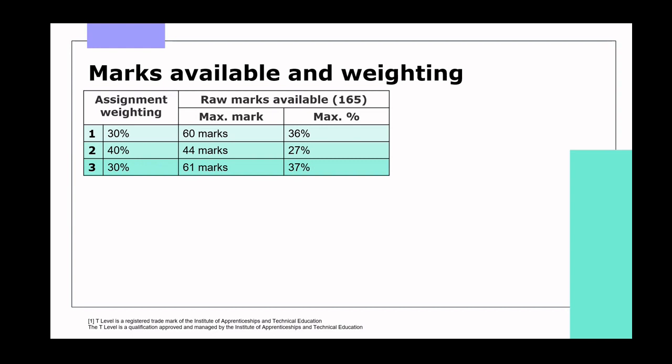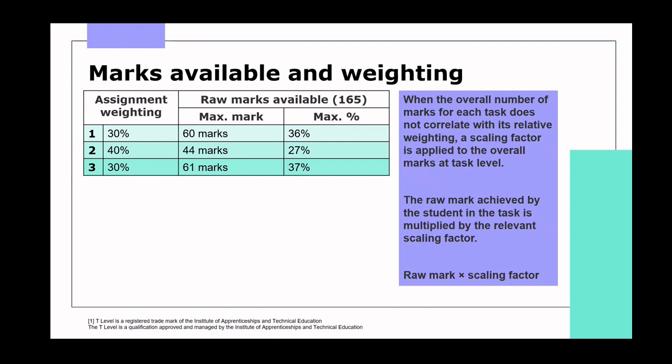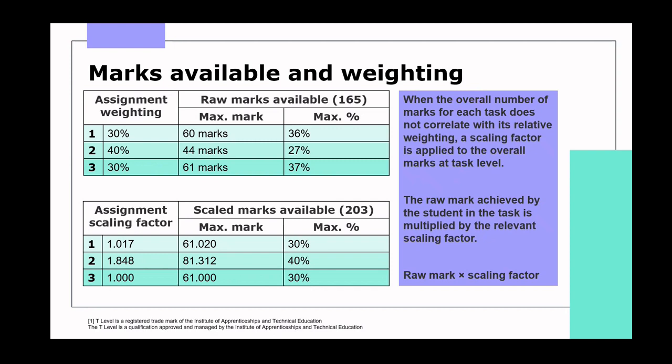This table shows the intended weighting of each assignment and the marks available. There is a discrepancy: the assignment weighting and the actual marks available are not the same. It's not always possible to increase marks available, as it can become overly prescriptive and the assessment wouldn't be as valid or reliable. Instead, a scaling factor is used — a number multiplied by the raw marks achieved to produce what's called a scaled mark. By applying this to raw marks, the weightings become aligned.